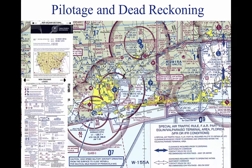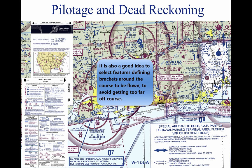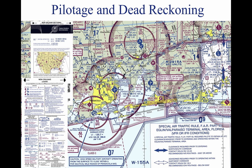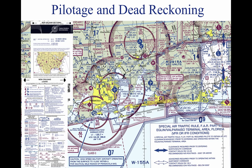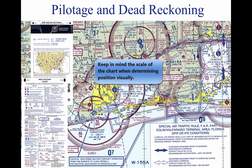If possible, select features that make useful boundaries or brackets on each side of the course, such as highways, rivers, railroads, and mountains. A pilot can keep from drifting too far off course by referring to and not crossing the selected brackets. Never place complete reliance on any single checkpoint. Choose ample checkpoints. If one is missed, look for the next one while maintaining the heading.